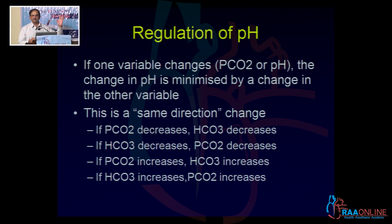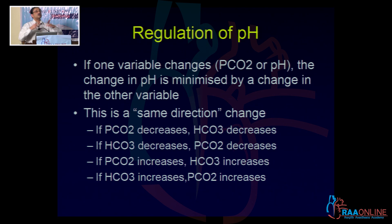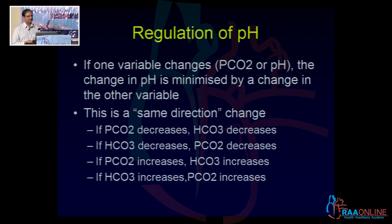It is not normal. So if you say the pH is 7.3 and therefore it is uncompensated, that is not true. Keep this in mind: it is an attempt towards normalization but the pH is never fully normalized.